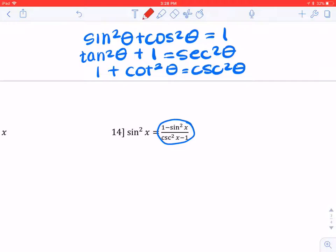I can manipulate the first equation by subtracting sine squared from both sides. And on the left-hand side, I'm left with cosine squared. That means I can substitute in this numerator for cosine squared.